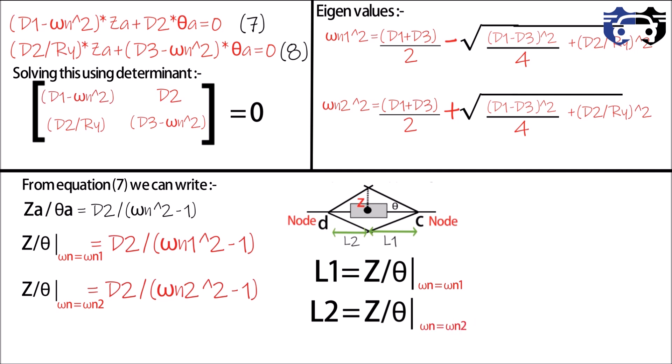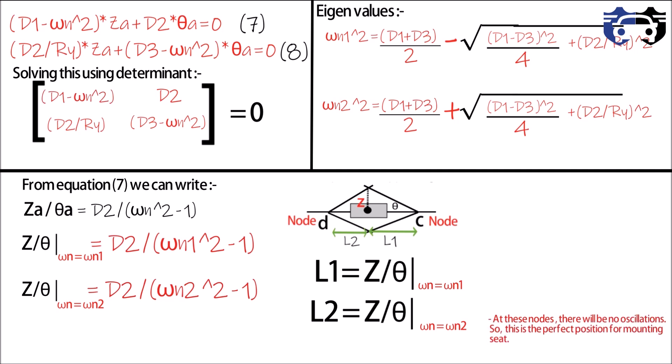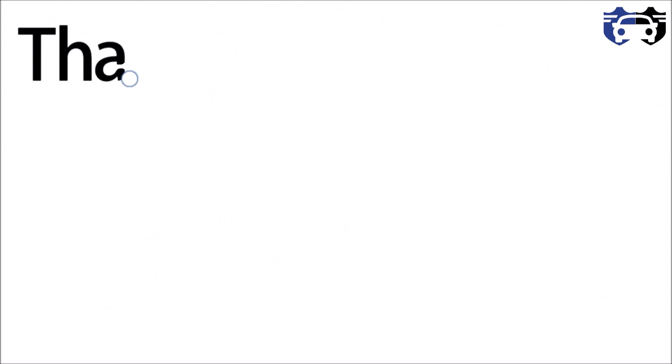Yes, here we got the values of L1 and L2 at the following frequencies. Now you can easily find the position of your seat as it is located at a distance of L1 from the CG to the right, and it is located at a distance of L2 to the left of the CG. At these nodes there will be no oscillation, so this is the perfect position for mounting the seats. So here we got the position for seats.